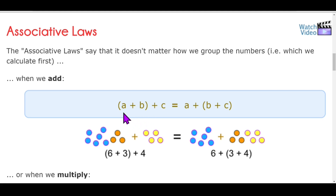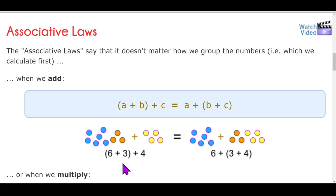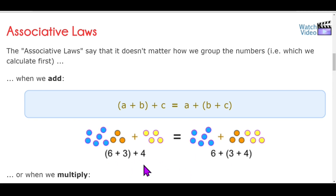On the left side, a is added to b first and then the result is added to c. This equals adding b and c first and then adding a. For example, add six and three first: six plus three is nine, and nine plus four is thirteen. This equals three plus four first, which is seven, and six plus seven is also thirteen. In both cases we get the same result — only the grouping differs.